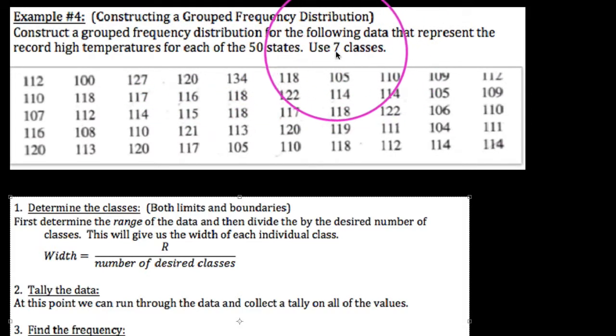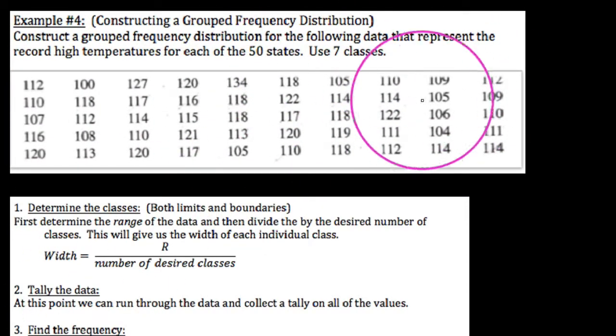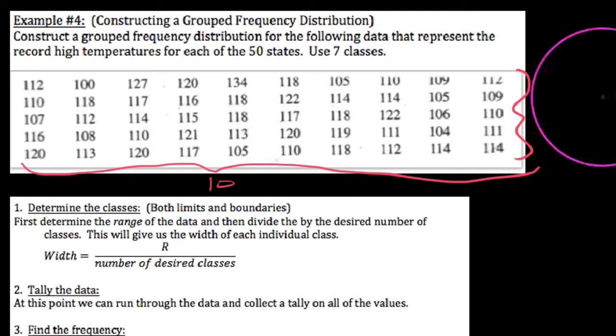We're going to use seven classes. First of all, you'll notice here that our raw data has been organized into this row column type of configuration where we have ten columns and five rows, 50 total states. It's a good way to keep track of your data when you're recording it. If we want to create a grouped frequency distribution, I've outlined the process down here, and the first thing we want to do is determine our classes.